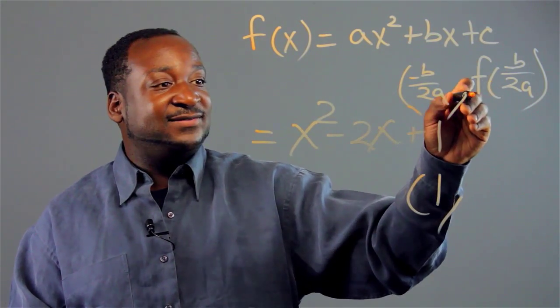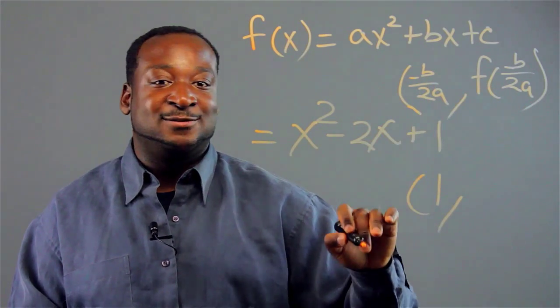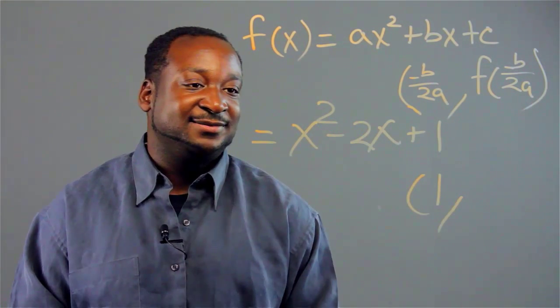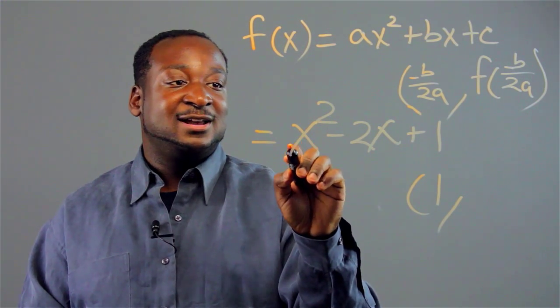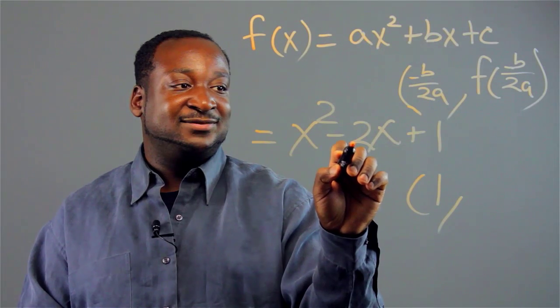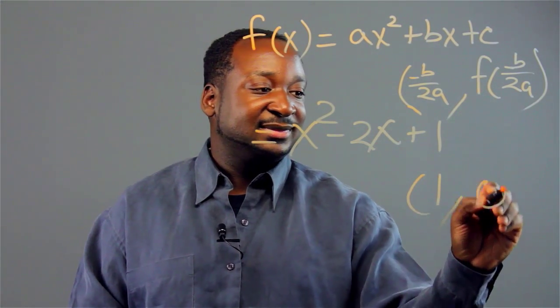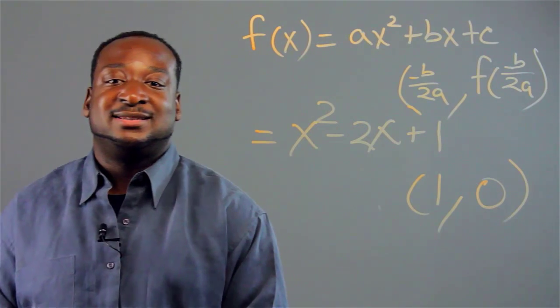Now f of negative b over 2a, I'll plug in the 1 to get this value. So that's 1 squared, which is 1, minus 2, that's negative 1, plus 1 gives me 0.